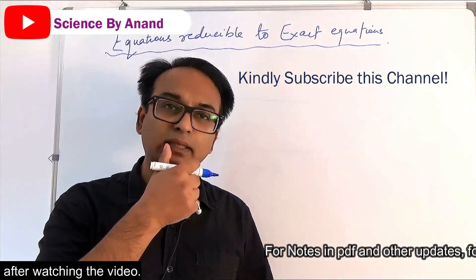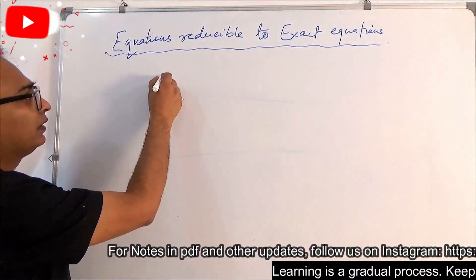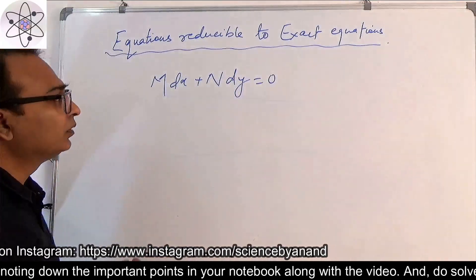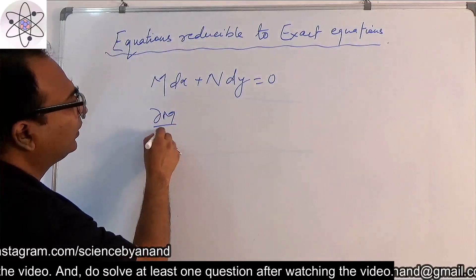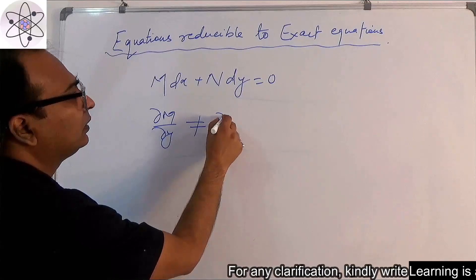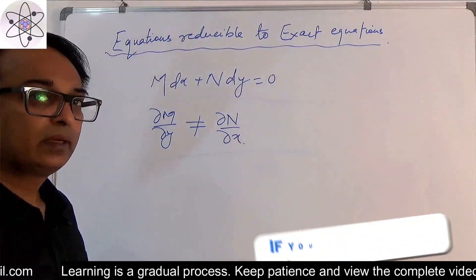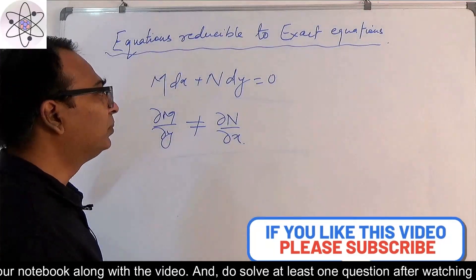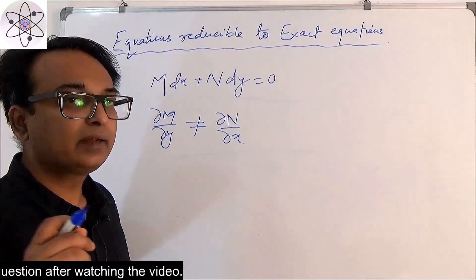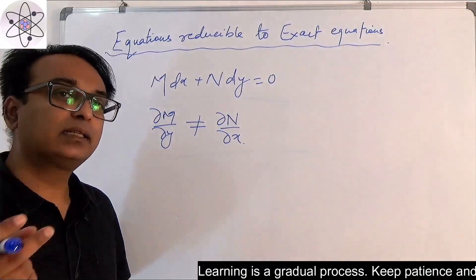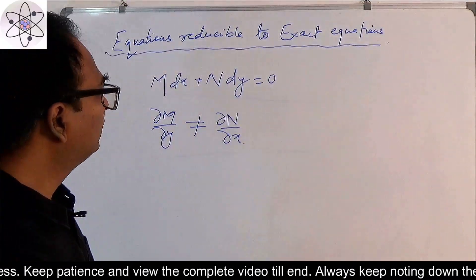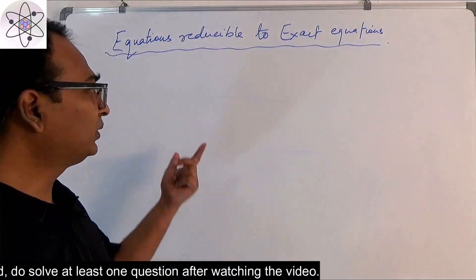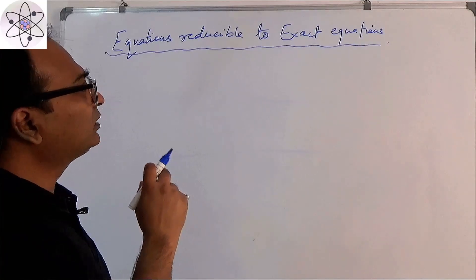In the last video we had seen that there are certain equations of the form M dx plus N dy equal to 0, where del M by del y is not equal to del N by del x, but certain equations can be converted to exact form by multiplying with a suitable integrating factor. We had seen one such integrating factor in the last video, so if you haven't gone through part 1, I would advise you to first go to that video.